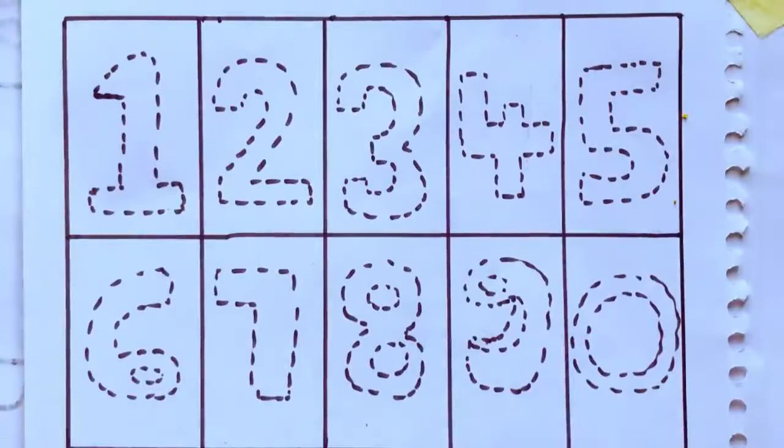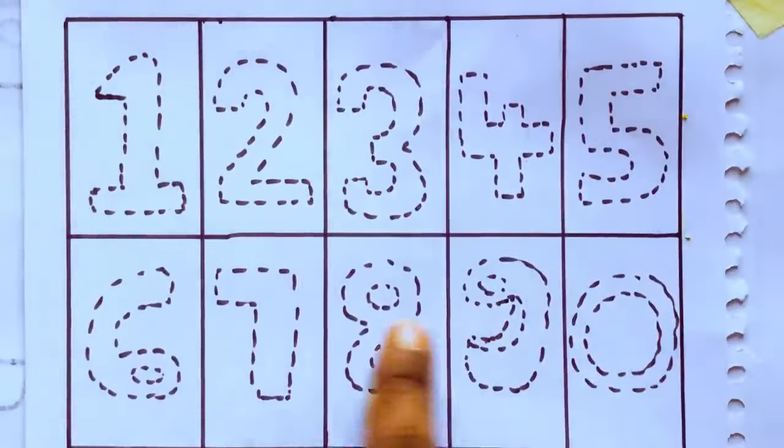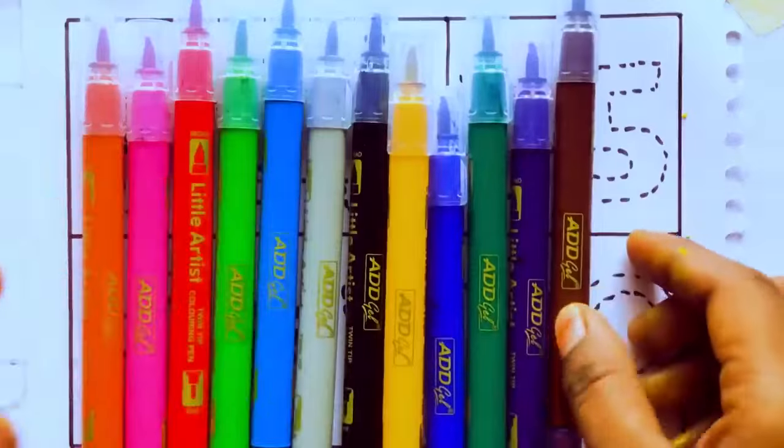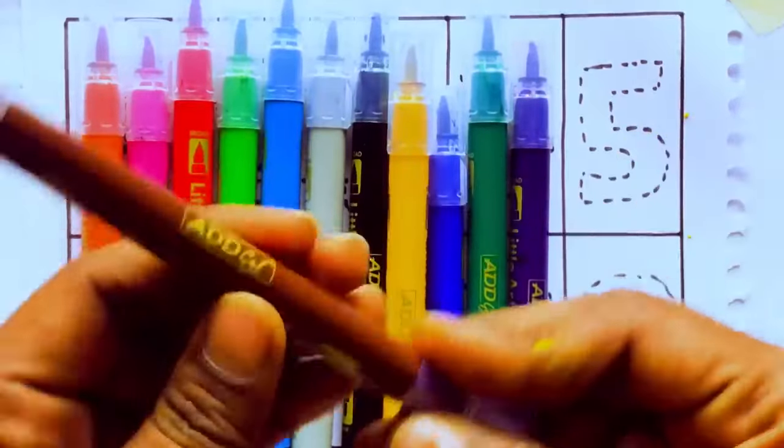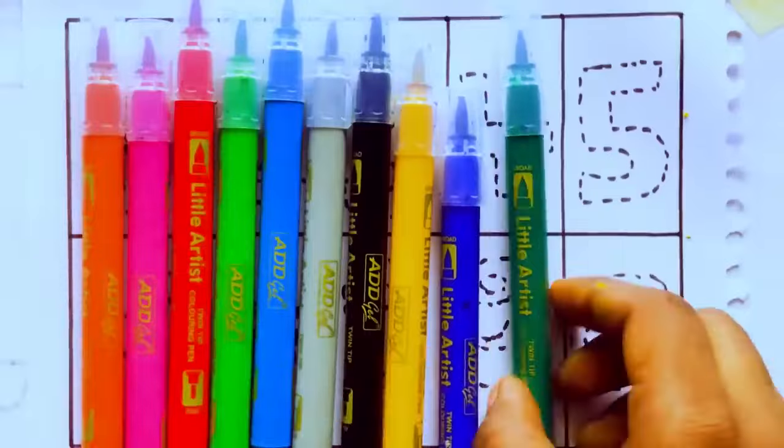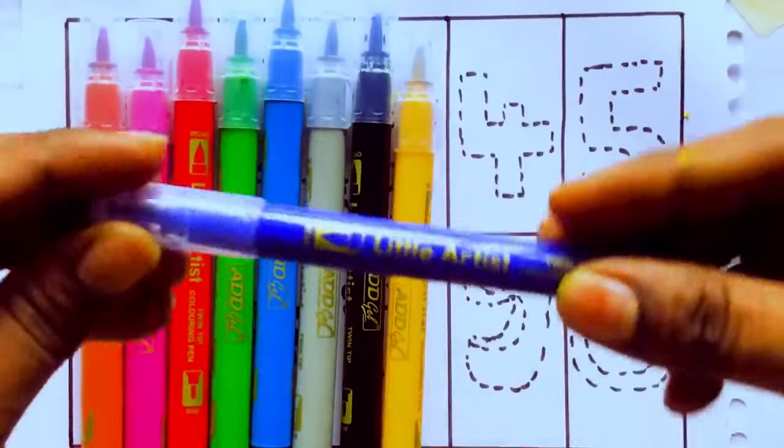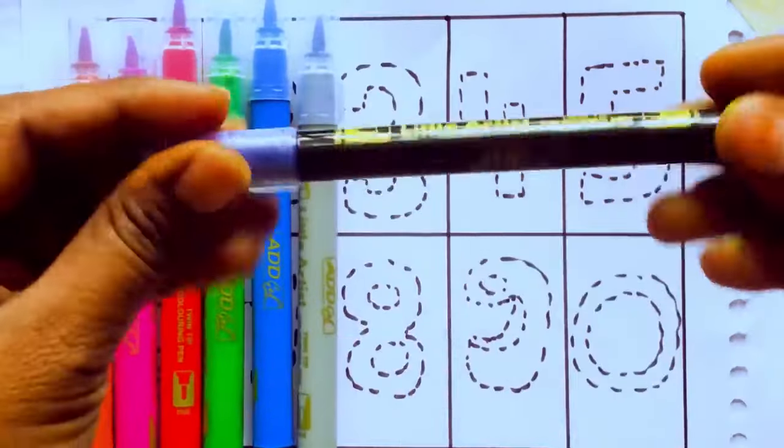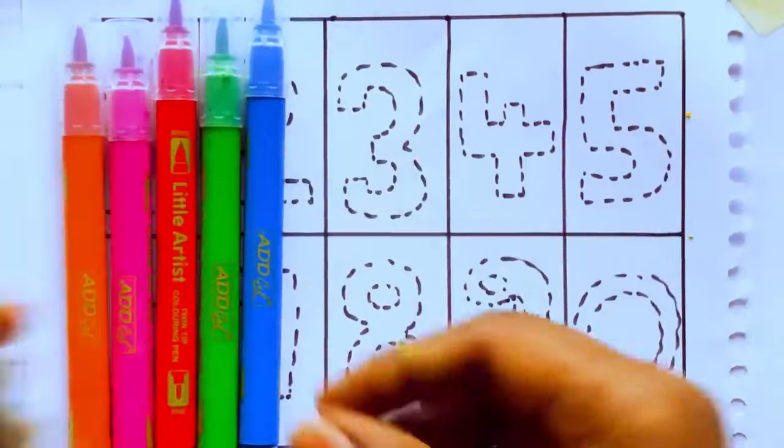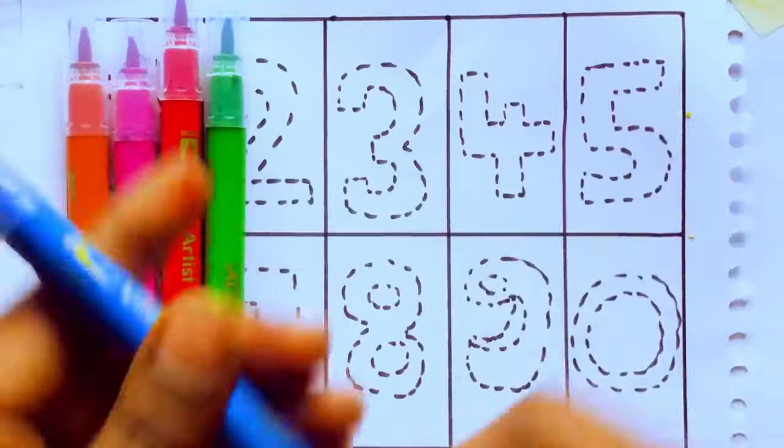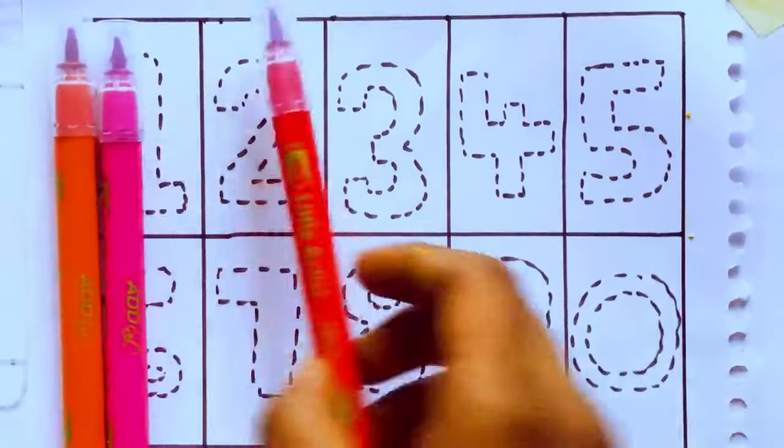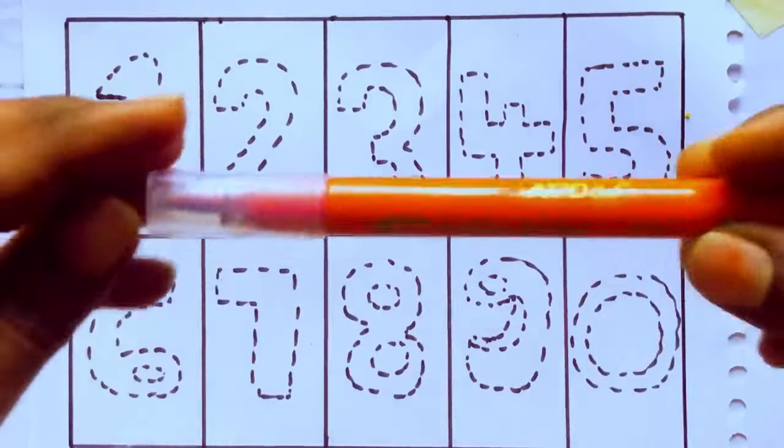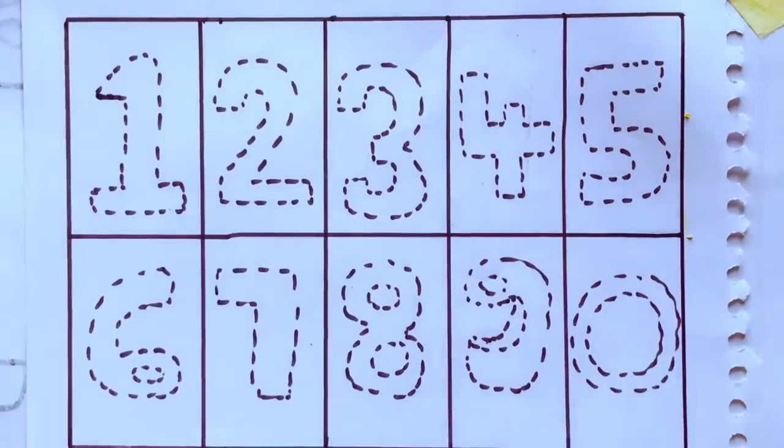Hi kids, how are you? Today we are going to learn numbers one to zero. Okay, let's introduce the color pencils. These are all the color pencils: brown color, violet color, green color, thick blue color, yellow color, black color, ash color, sky blue color, light green color, red color, pink color, and orange color.